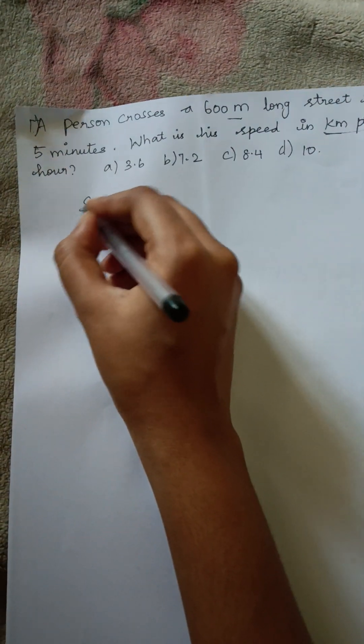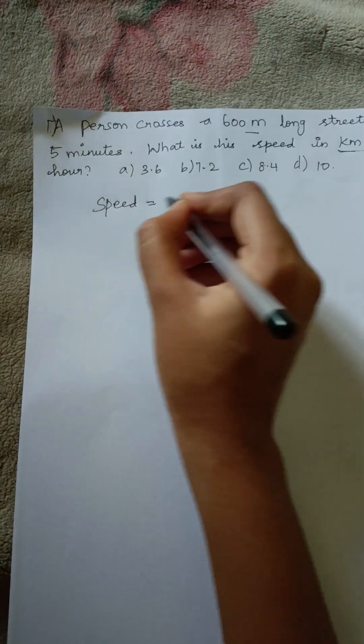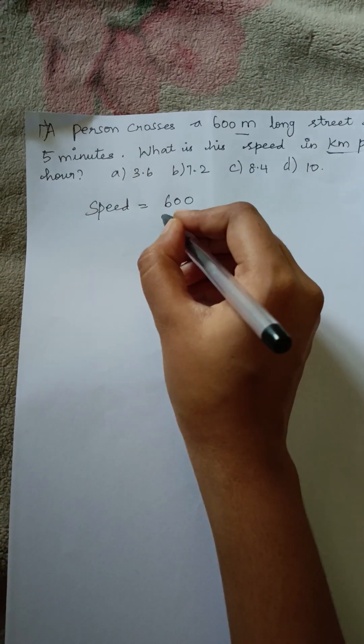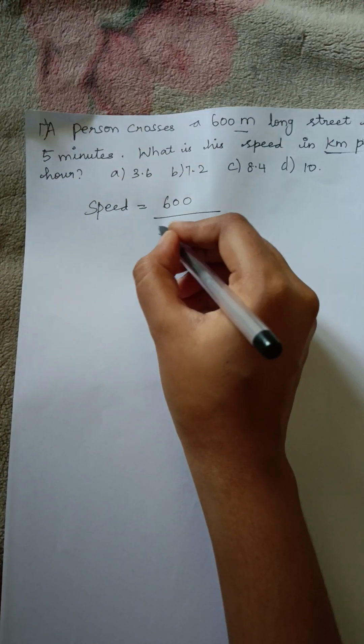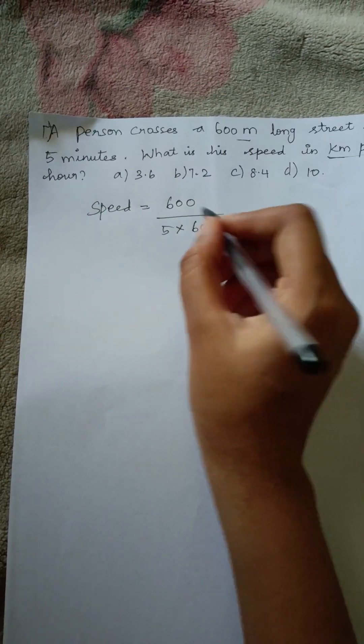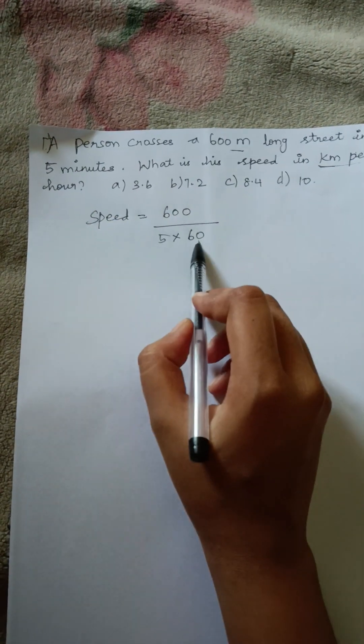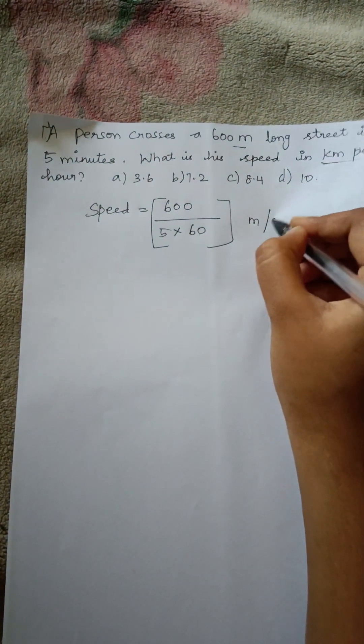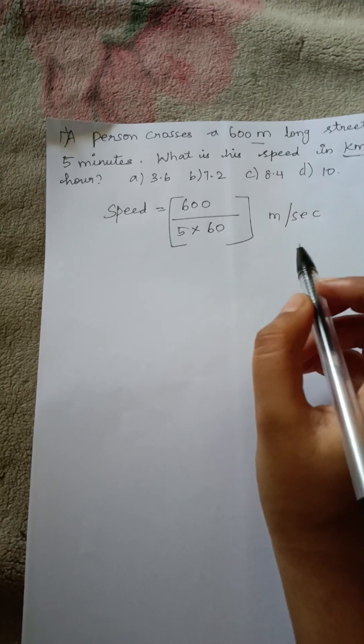The first step is we need to find the speed. Speed is equal to 600 divided by 5 into 60. 60 is nothing but minutes. Here five minutes, in one hour there is 60 minutes, so this is meter per second.